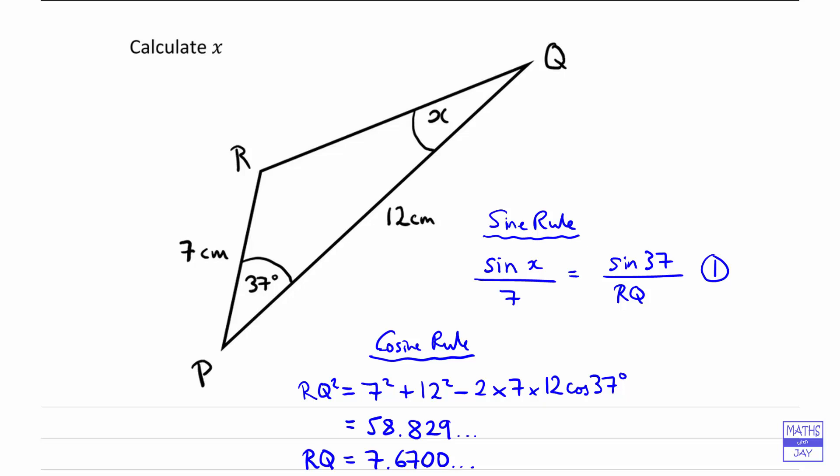we can now go back to equation one, where we used the sine rule, and all we need to do is put that in, and we'll be able to find sine x first of all, and then go on and find x.